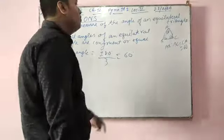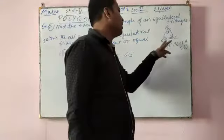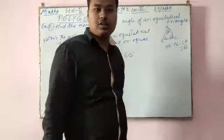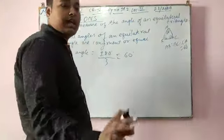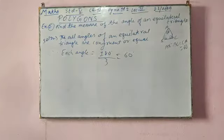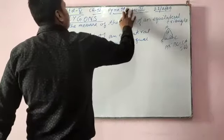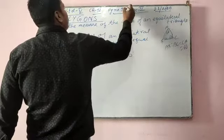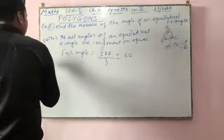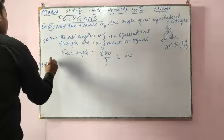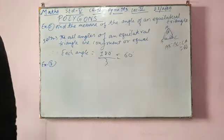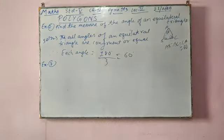That's why I told you that in an equilateral triangle, all angles are 60 degrees and all sides are equal. This was example number two. Now come to example number three — 50 degrees.